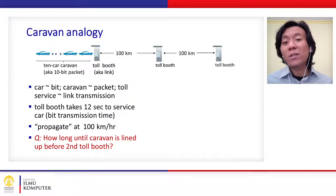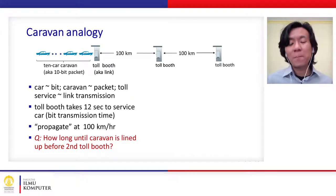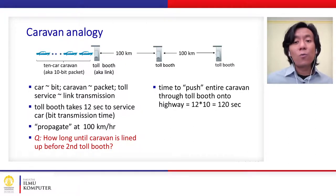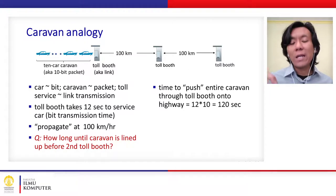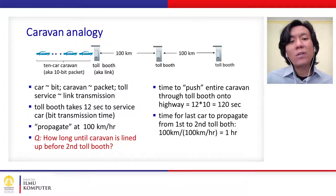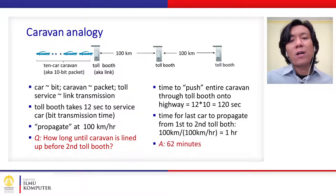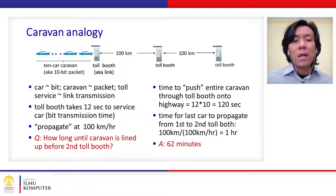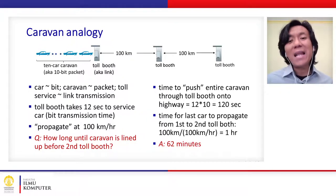It takes one hour to propagate between one toll booth and another. The time to push the entire caravan of 10 cars through the first toll booth is 120 seconds — two minutes — because each car takes 12 seconds times 10 cars. Every car then takes one hour to propagate to the second booth, so total time is 2 minutes plus 60 minutes. This represents transmission delay plus propagation delay.